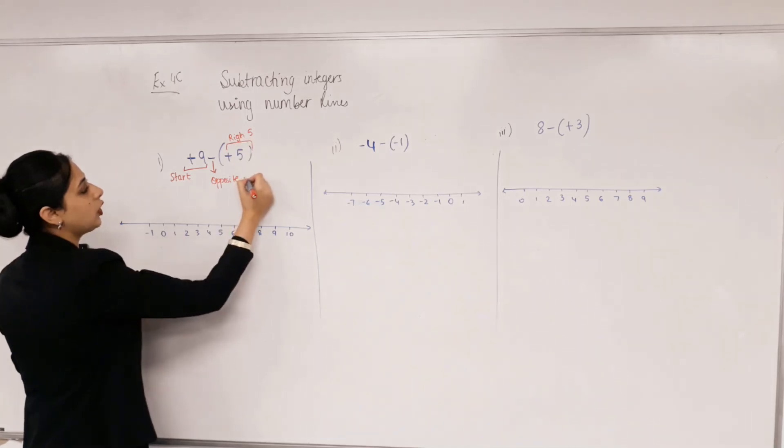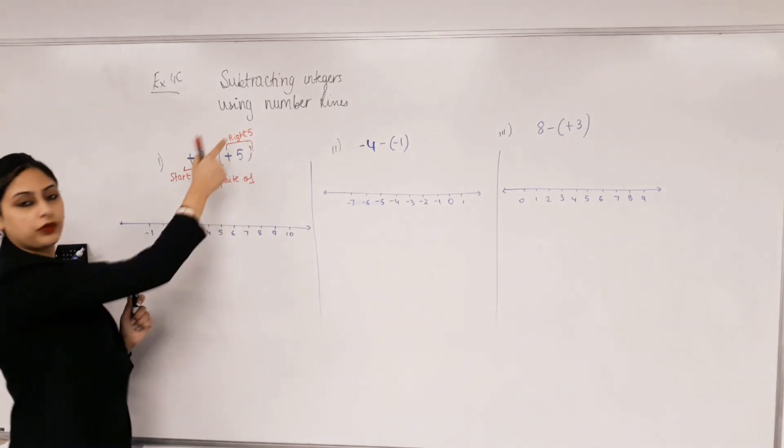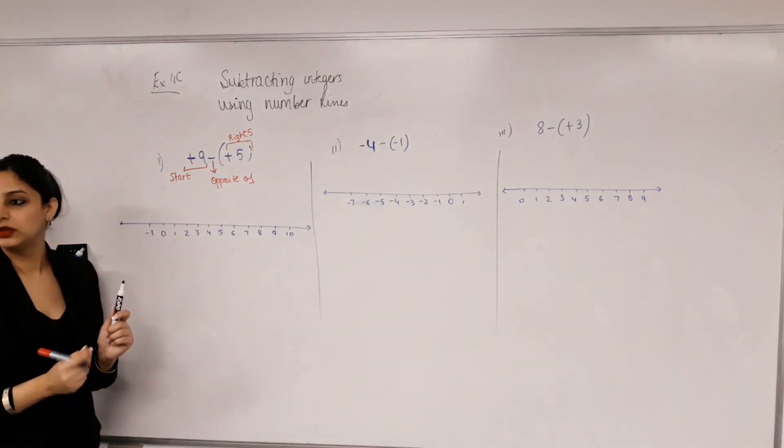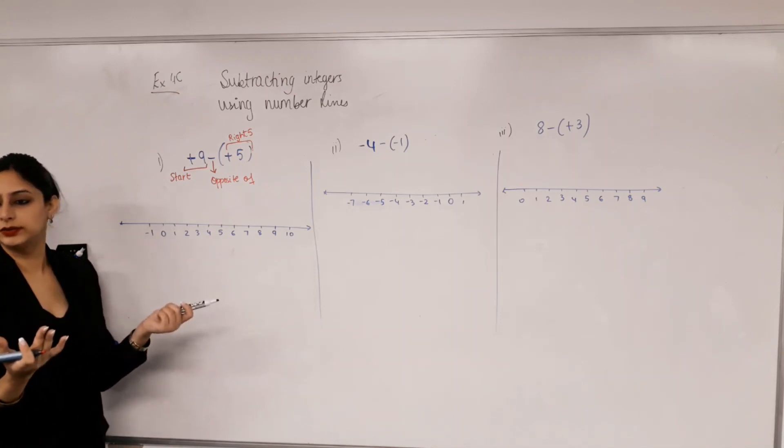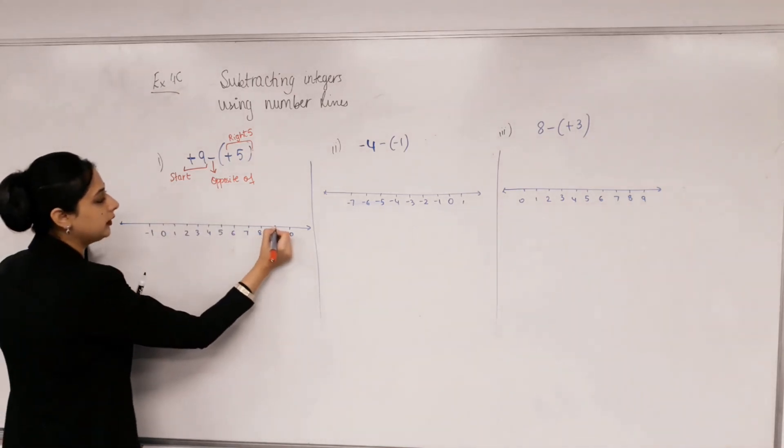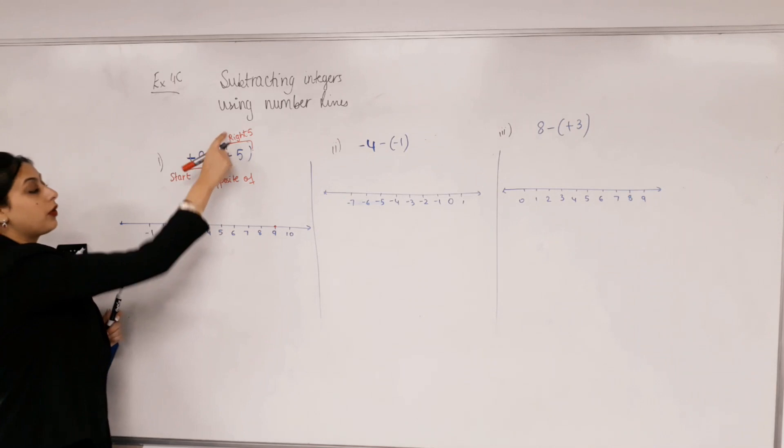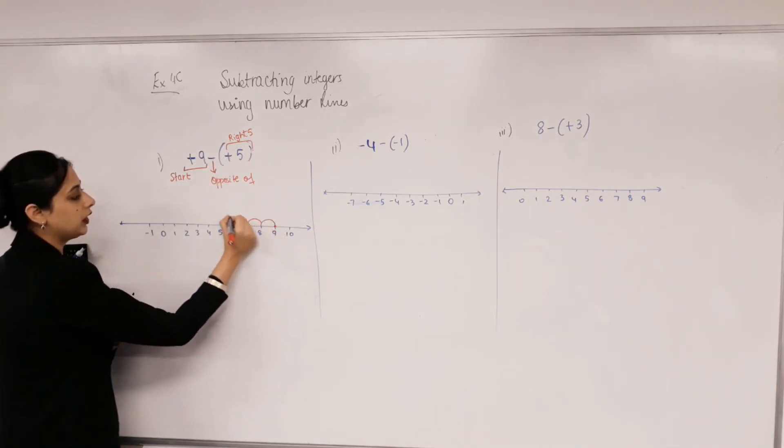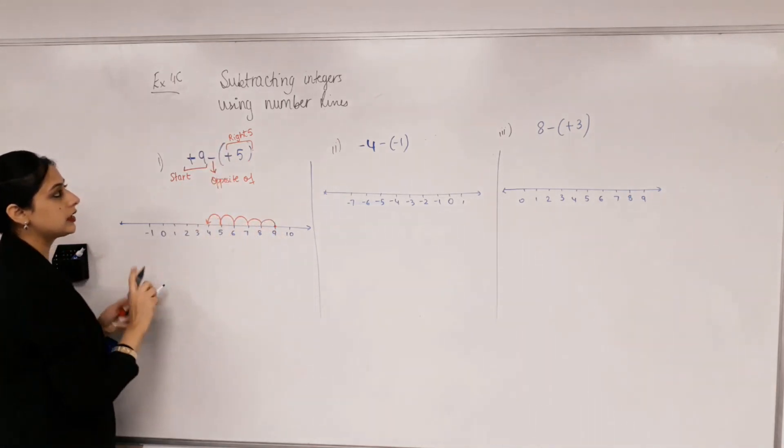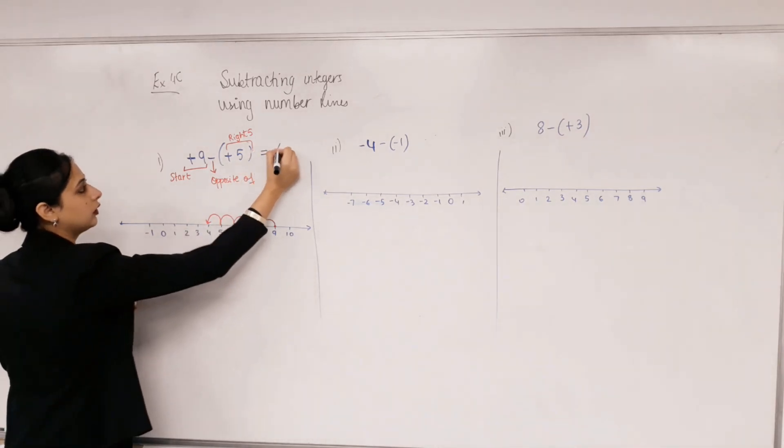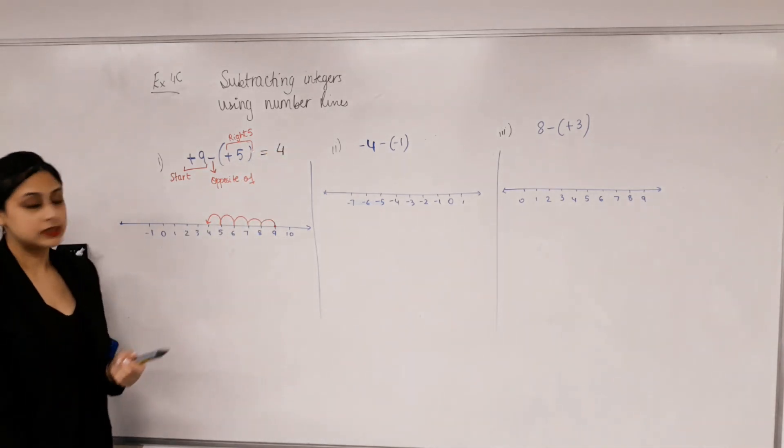So what's the opposite of move right five? Move left five, that's all. We start from positive nine and we move left five, so one, two, three, four, five. What's the answer? Four. Does that make sense?